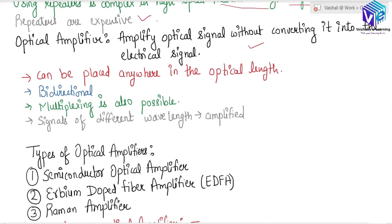The optical amplifier can be placed anywhere along the length of the optical fiber. We can place it near the receiver or near the transmitter as well. Whereas repeaters were placed only in between — they were not used near the transmitter or near the receivers.